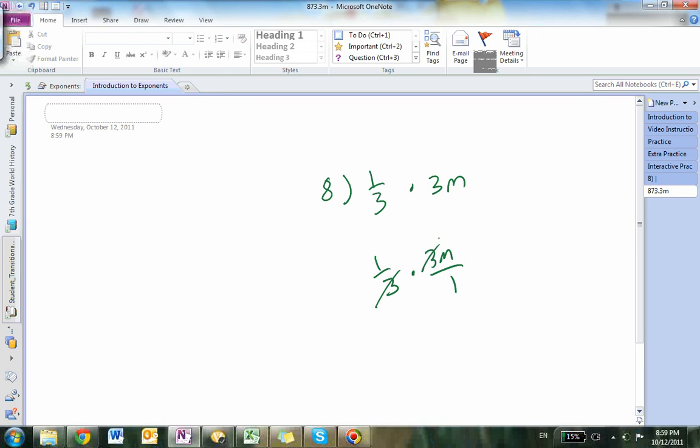3 goes into 3, 3 times, so make it 1, 1. 1 times 1 equals 1, 1 times 1 equals 1. So 1/1 equals, oh, it would be 1m actually. 1m/1, so it would equal 1m.